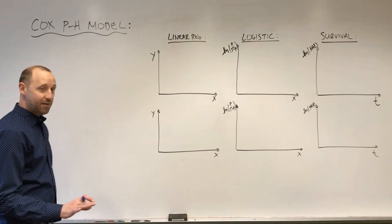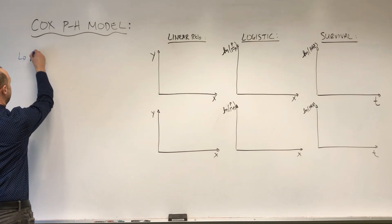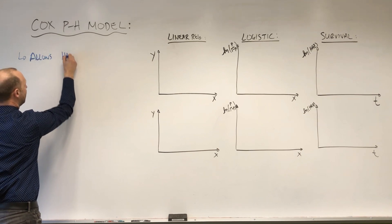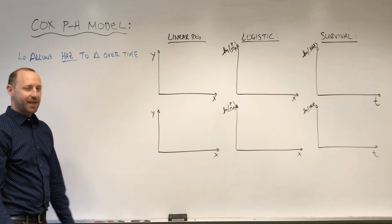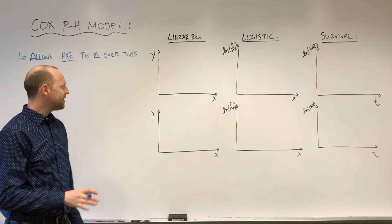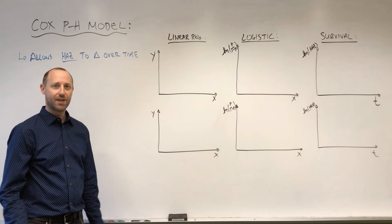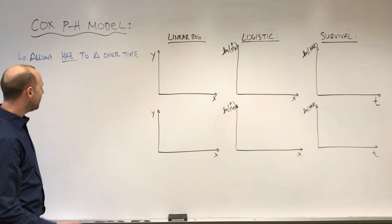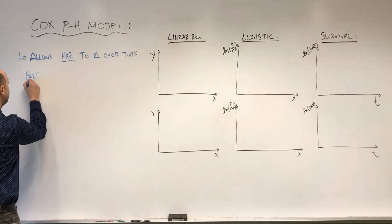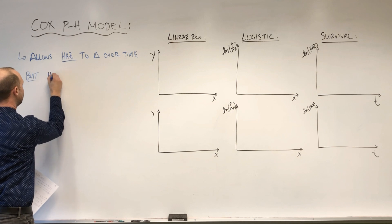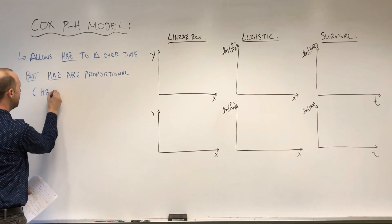The big thing with Cox proportional hazards model is that it allows the hazard to change over time. The exponential model has a constant hazard. We can look at other parametric models like the Weibull or accelerated failure time models that allow the hazard to increase or decrease proportionally with time. Cox's model allows the hazard to fluctuate — it can increase and decrease as time goes by — but it does assume that hazards between groups are proportional, or in other words, that the hazard ratio is constant.